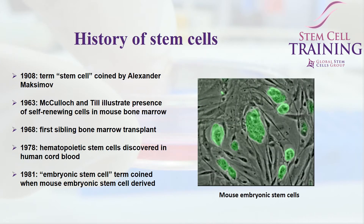Here is a brief history of some of the different types of stem cells that have been developed, as well as some of the different terms that have been coined. In 1908, the original term 'stem cell' was coined. Then, in the 60s, we began doing bone marrow transplantations, which we often forget is actually a stem cell transplantation. In this case, we are trying to replenish the blood supply for cancer patients by predominantly using hematopoietic stem cells. However, there are quite a few mesenchymal cells that are also part of that population.